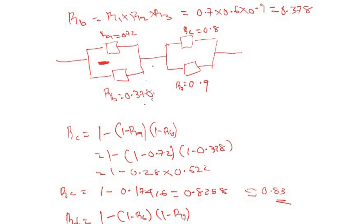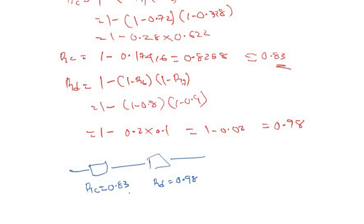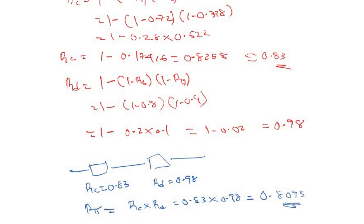We have now further reduced our system to two single components in series: R_C = 0.83 and R_D = 0.98. The total system reliability is R_C × R_D = 0.83 × 0.98 = 0.8093. As you can see, this is very simple and straightforward using the network reduction method.